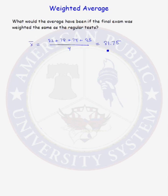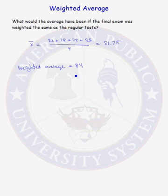The straight average of those four test scores is 81.75. The weighted average, when the final exam counted as the equivalent of two test scores, was 84. So in this particular case, the weighting of the final exam helped the student and gave a higher average than would have been achieved if the regular tests and the final exam were weighted the same.